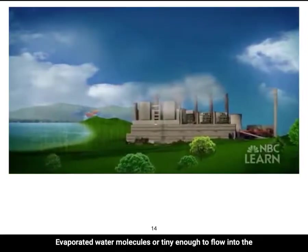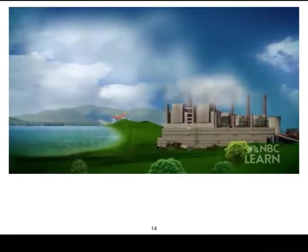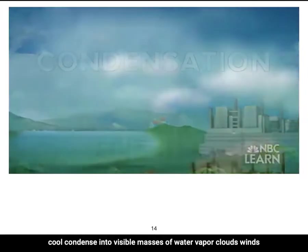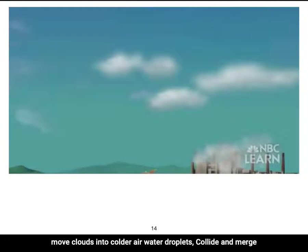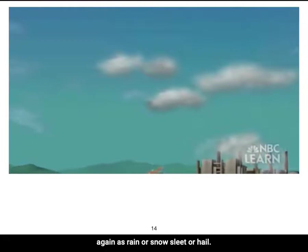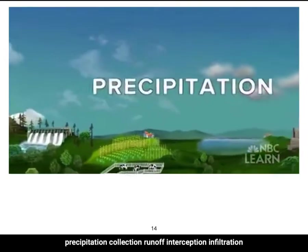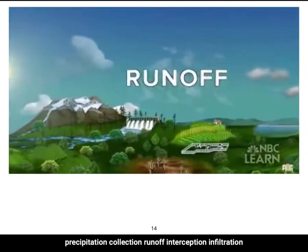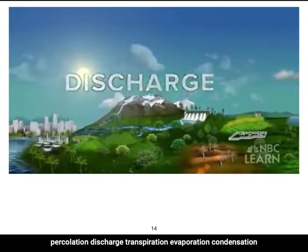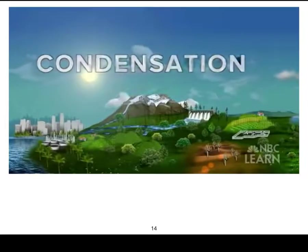Evaporated water molecules flow into the air, mixed with smoke and dirt particles in the atmosphere, cool, and condense into visible masses of water vapor — clouds. Winds move clouds into colder air; water droplets collide and merge, growing bigger and heavier until they fall again as rain or snow, sleet or hail. Precipitation. Collection. Runoff. Interception. Infiltration. Percolation. Discharge. Transpiration. Evaporation. Condensation. The Water Cycle.